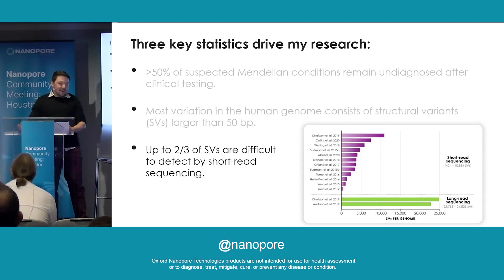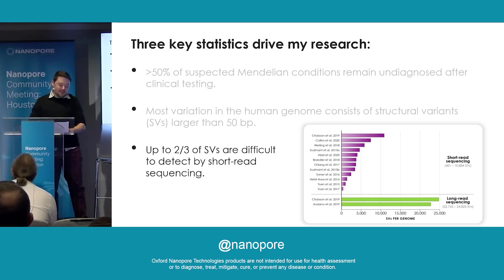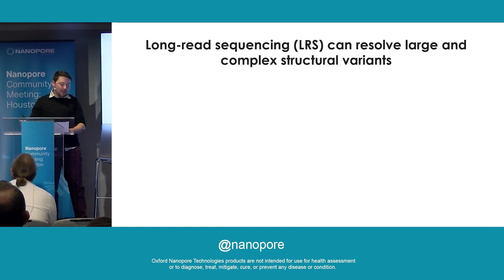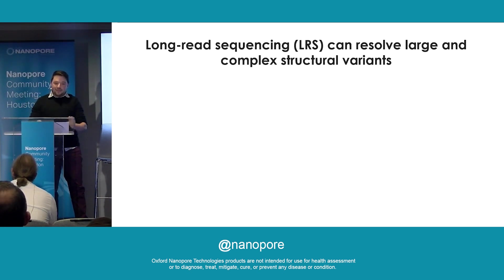And the last thing is that somewhere between half and two-thirds of structural variance are not captured by traditional short-read sequencing methods. And so this leads to a problem with databases of genetic variation missing out on a lot of the structural variance that are there.